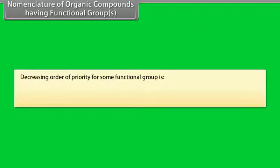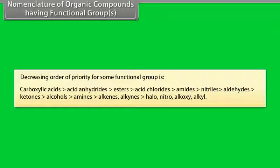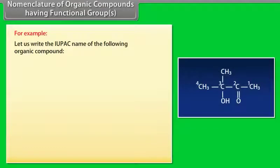The decreasing order of priority for functional groups is: carboxylic acid, anhydrides, esters, acid chlorides, amides, nitriles, aldehydes, ketones, alcohols, amines, alkenes, alkynes, halogens, nitro, alkoxy, alkyl. For example, let us write the IUPAC name of the following organic compound.